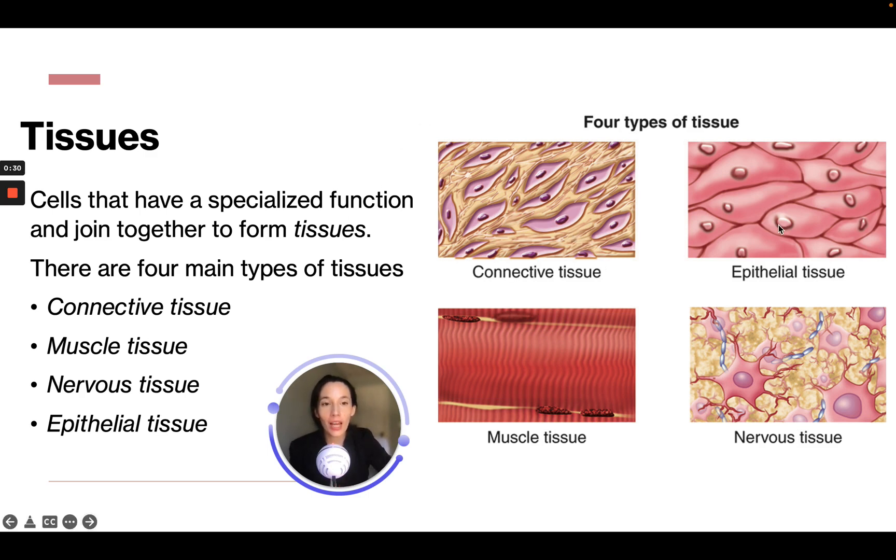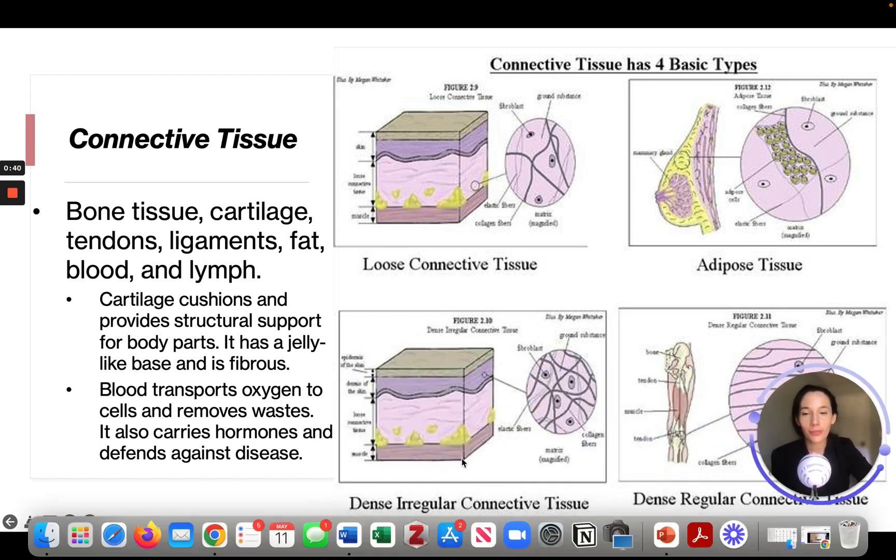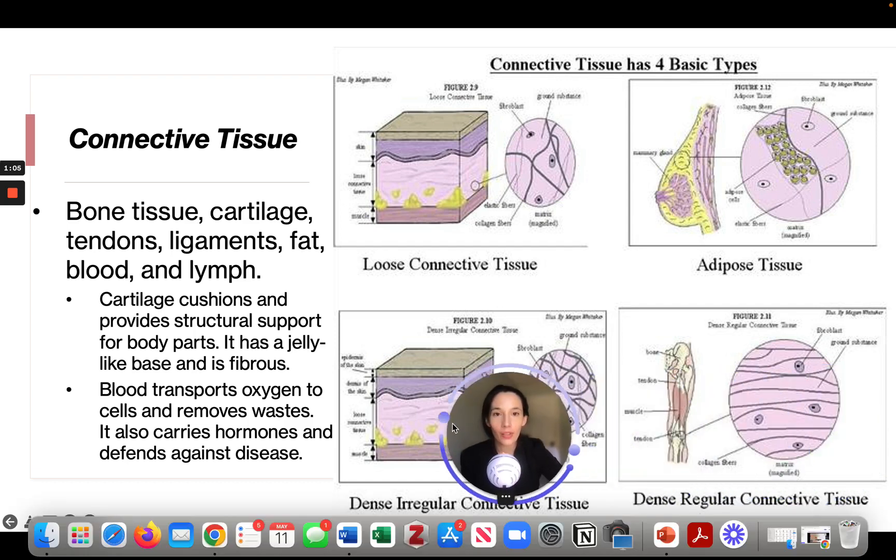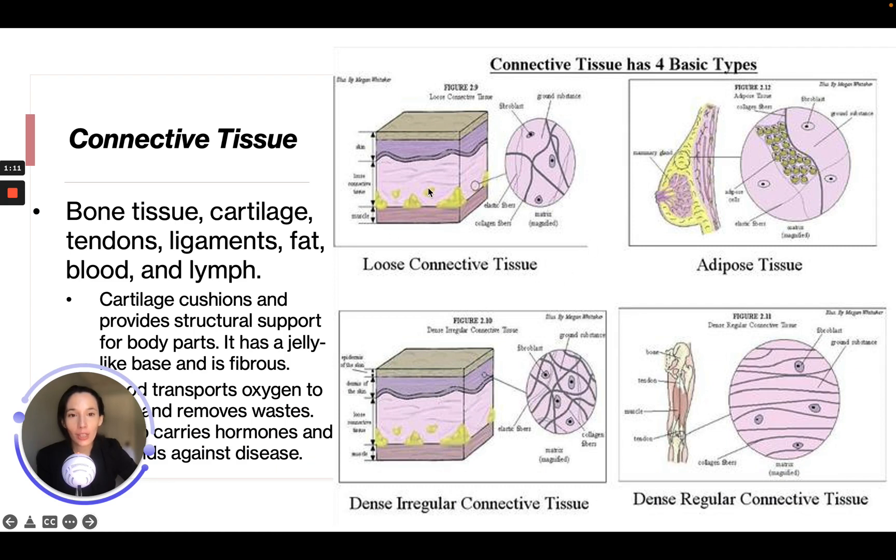We have connective tissue, epithelial tissue, muscle tissue, and nervous tissue. So first let's talk about connective tissue. This is going to be bone tissue, cartilage, tendons, ligaments, fat, blood, and lymph. Cartilage cushions and provides structural support for body parts. It has a jelly-like base and is fibrous. Blood transports oxygen to cells and removes waste. It also carries hormones and defends against disease. Connective tissue has four basic types: loose connective tissue, adipose tissue, dense irregular connective tissue, and dense regular connective tissue.